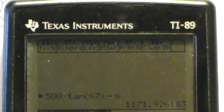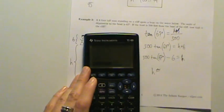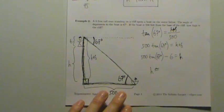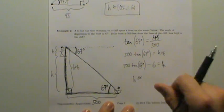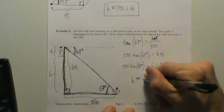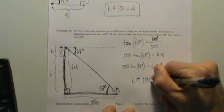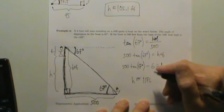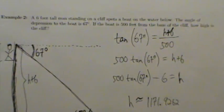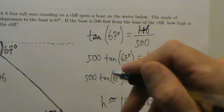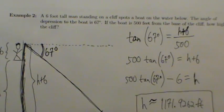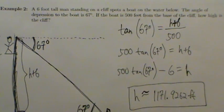So that's pretty much our answer. We weren't told how many decimal places to round to, so let's include four decimal places: 1171.9262 feet. Make sure we put the units on there. And that's it for example two of applications of trig.